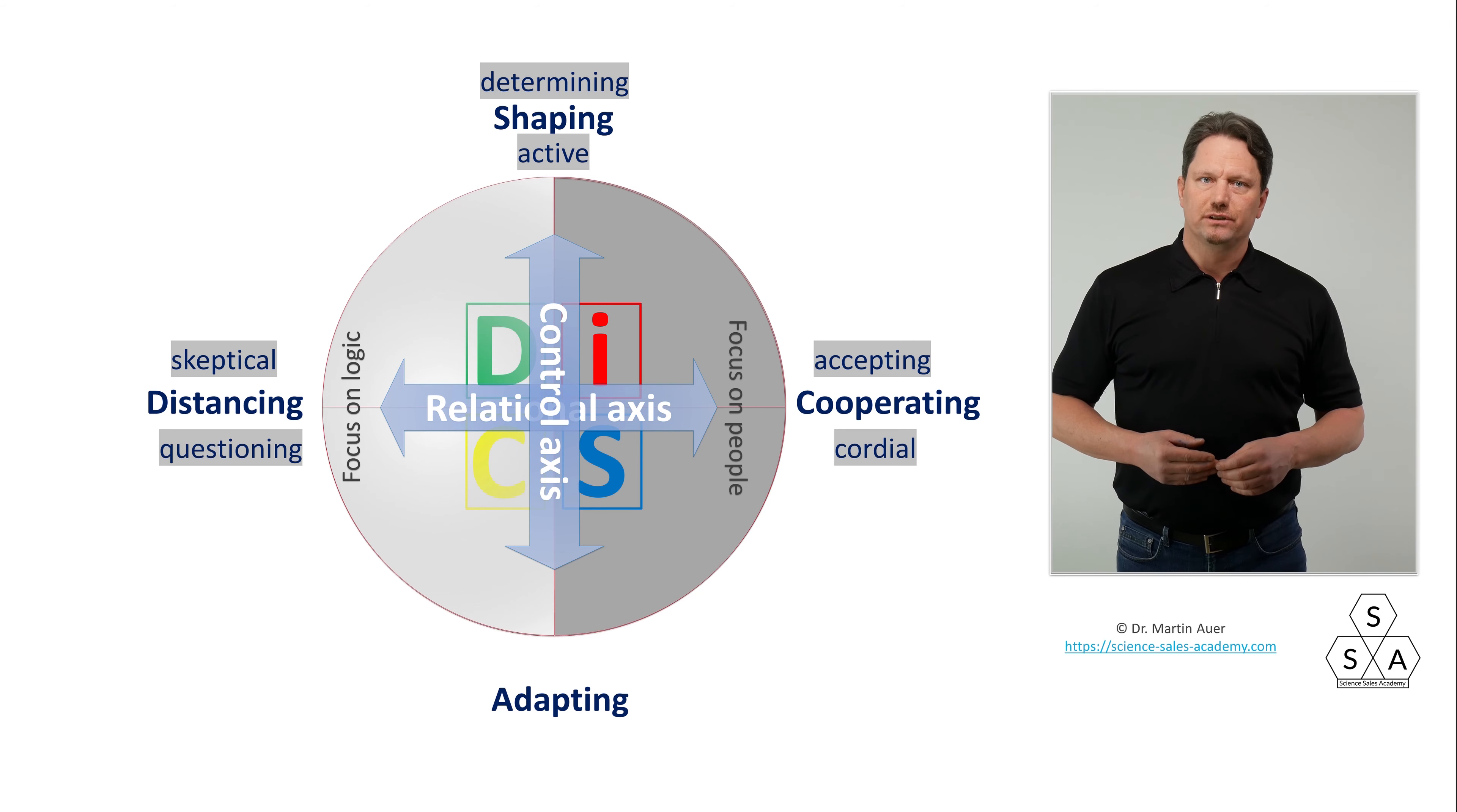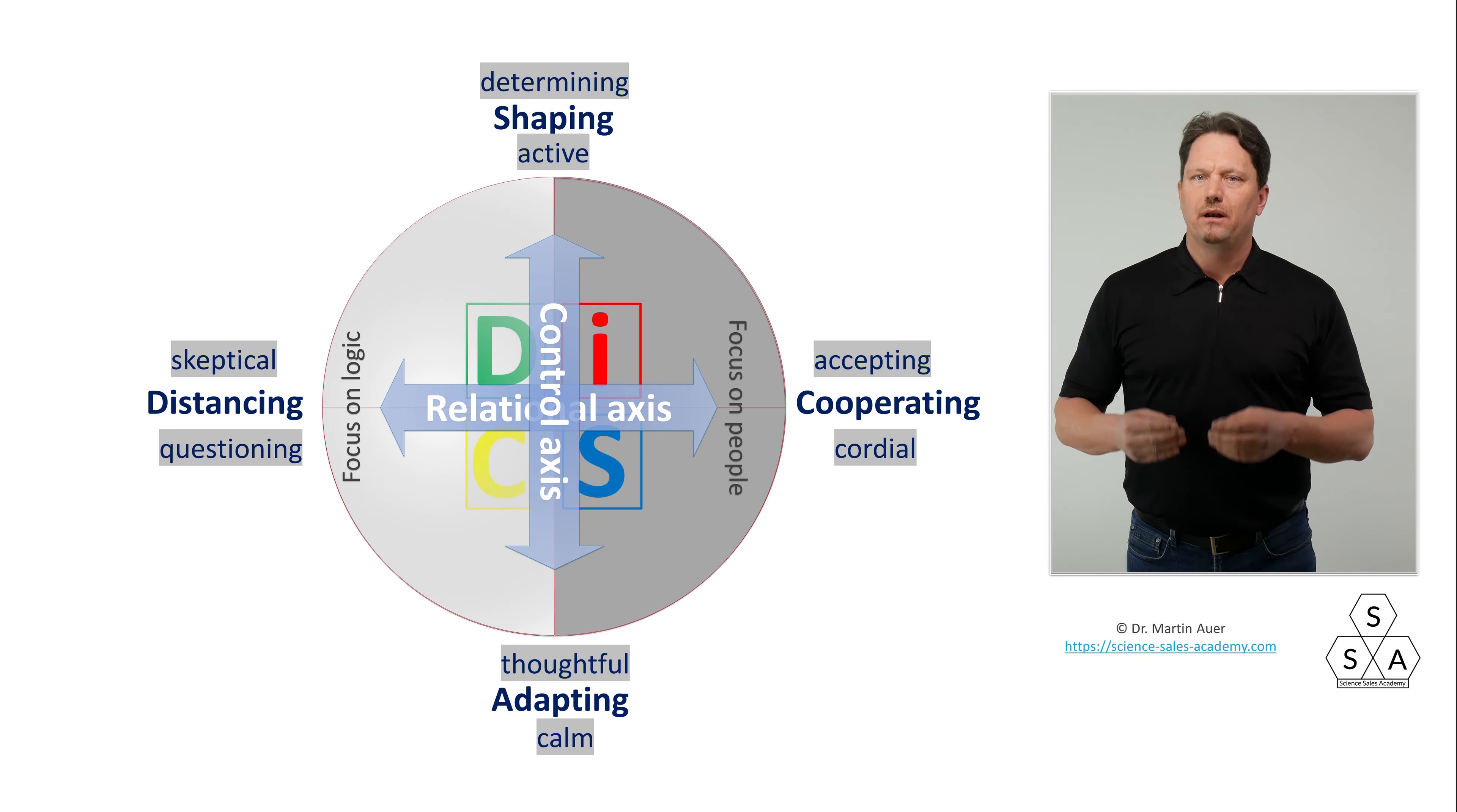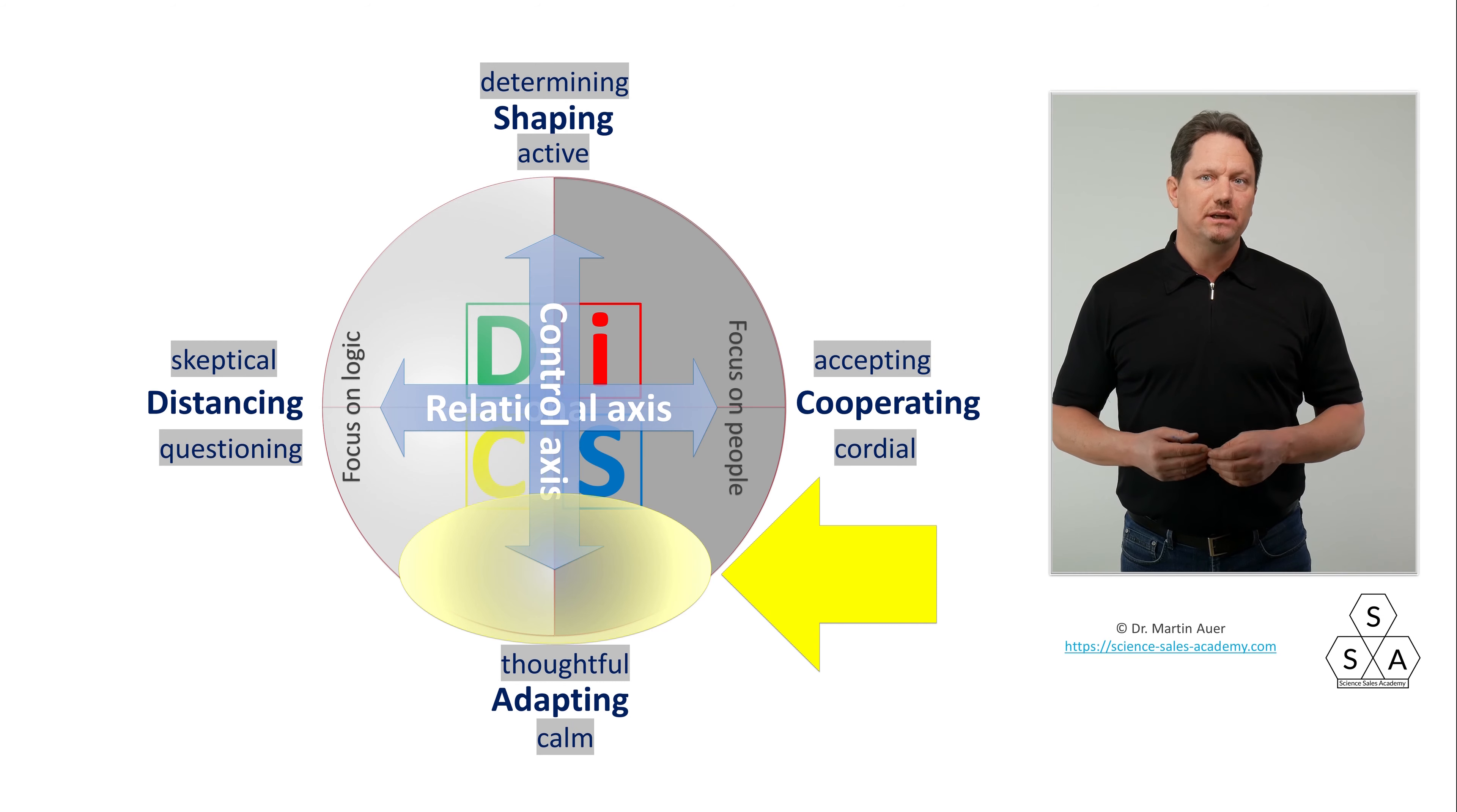Accordingly, at the other end of this vertical axis, we find behavioral characteristics like thoughtful, calm, planning, cautious, careful. Here, first of all, it has to be planned. And if ever possible, every single step has to be planned in advance before I start moving. Every risk has to be assessed. Every possible problem has to be considered. People with a behavioral priority here in this area, they are always well prepared, rarely encountering unforeseen problems.